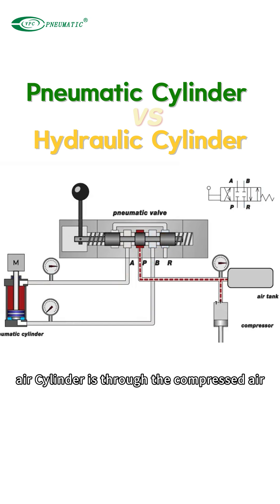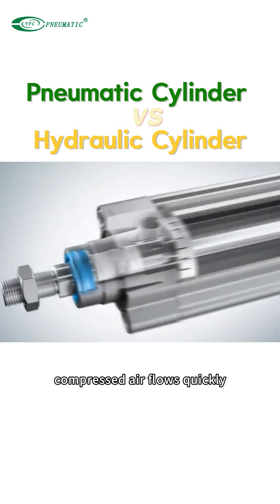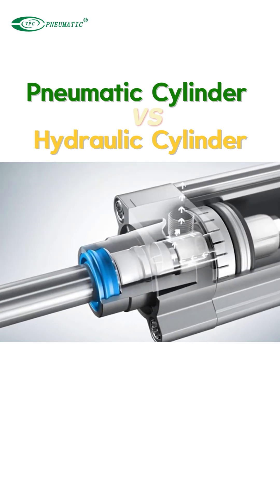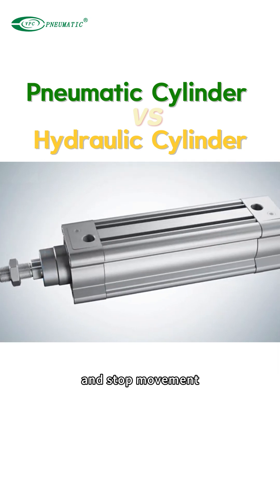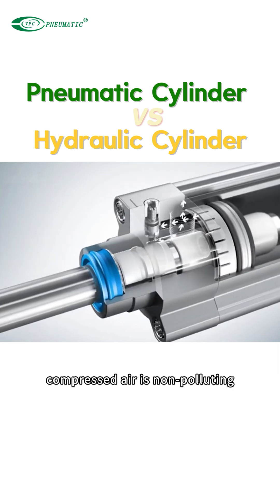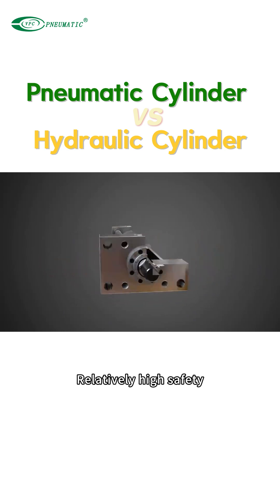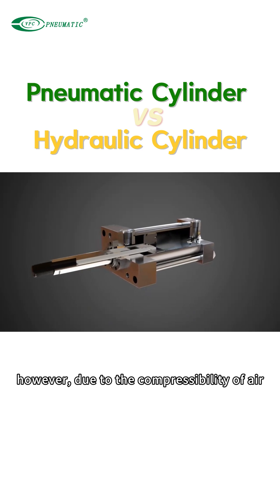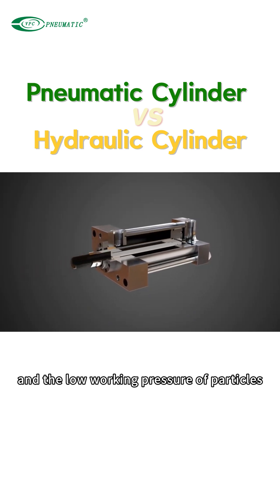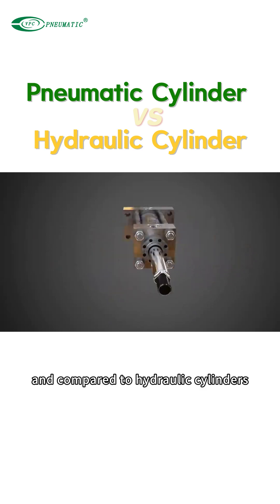The air cylinder drives the piston through compressed air. Compressed air flows quickly, allowing the cylinder to quickly start and stop movement. Compressed air is non-polluting, less likely to leak or explode, and has relatively high safety. However, due to the compressibility of air and the low working pressure, the output force is usually small.